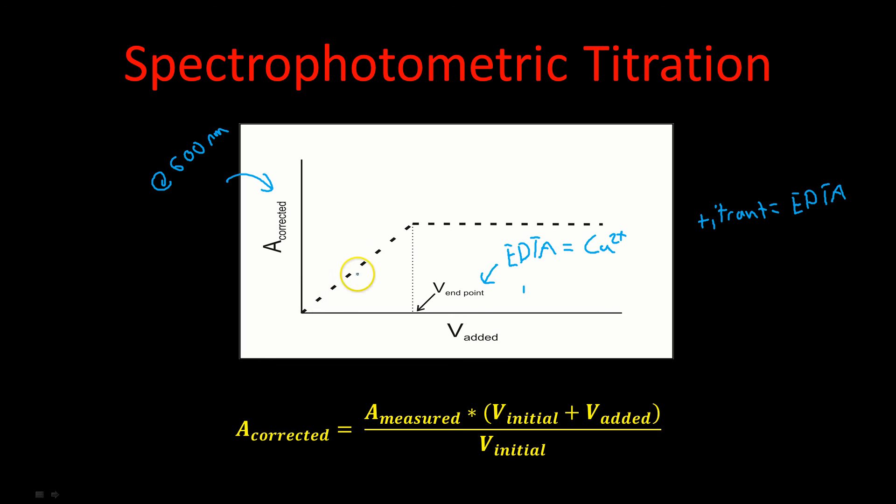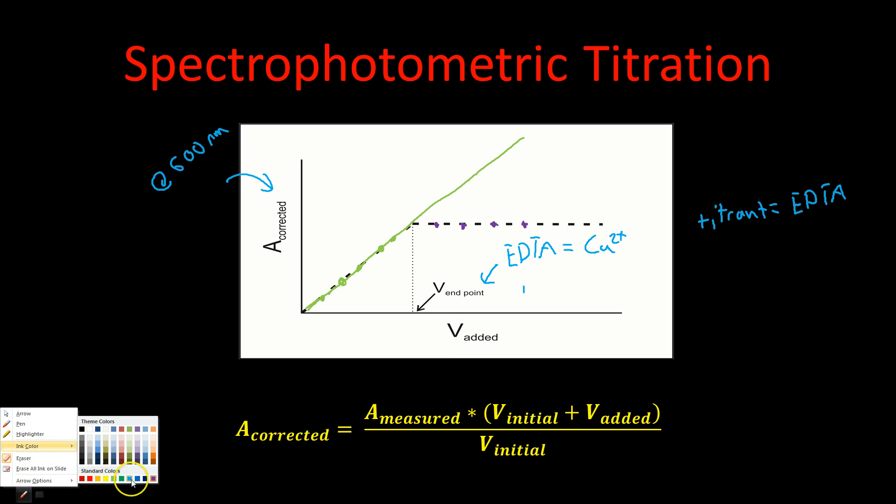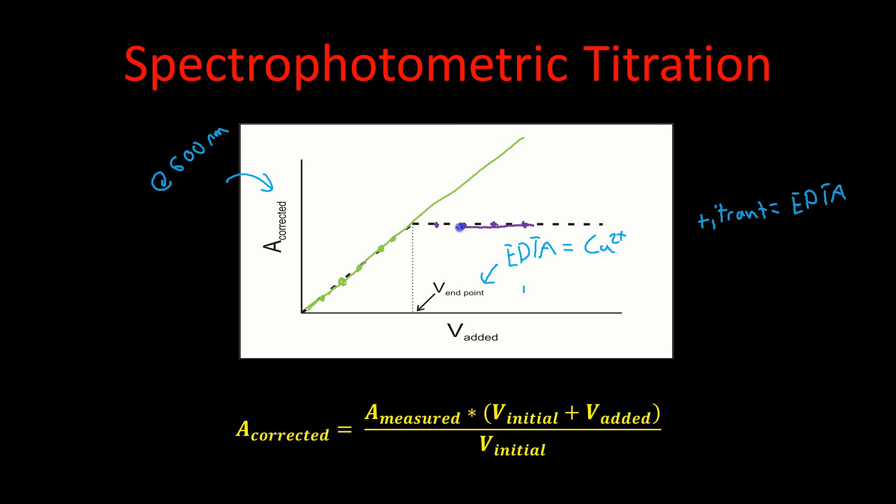What you'll do is you'll basically fit two linear regressions. You take one regression before the equivalence point, and you'll fit a line. You'll base this off of data points that you've collected, just like we've done in class many times with our calibration curves. You'll fit one line this way. Then after we get to the equivalence point, we're going to fit a second curve. The intersection where these two meet is your equivalence point.